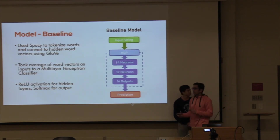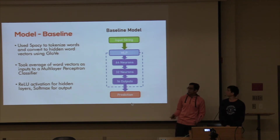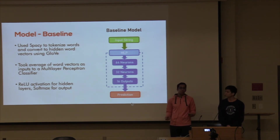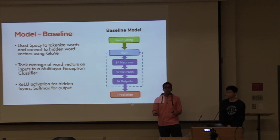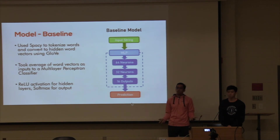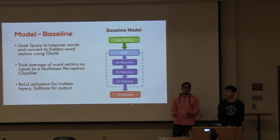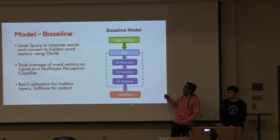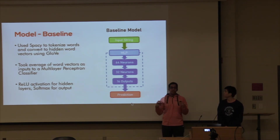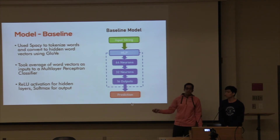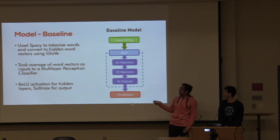When we started this project, our backgrounds weren't that strong and we weren't sure which models to approach. So our strategy was to try out a number of different models and compare performance with as much time as we had available. For the baseline, inspired by Assignments 4 and 5, we used Spacy to tokenize the Reddit posts, converted them into word vectors using Stanford GloVe embeddings, took the average of those, and trained a multi-layer perceptron classifier.